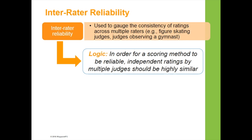The last type of reliability is a special case involving multiple raters or judges. This is used to gauge the consistency of ratings across multiple raters or observers, and is often used in figure skating or gymnastics competitions. The logic is that in order for a scoring method to be reliable, independent ratings made by multiple judges should be highly similar.